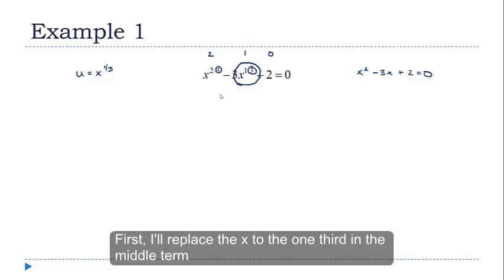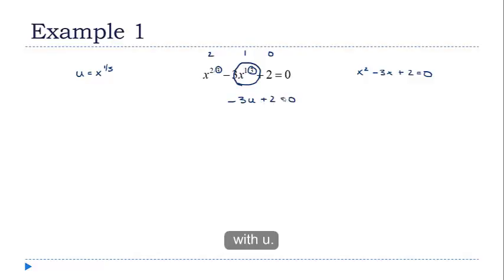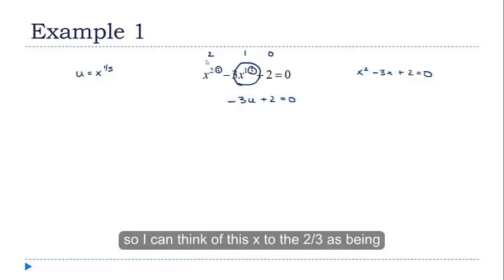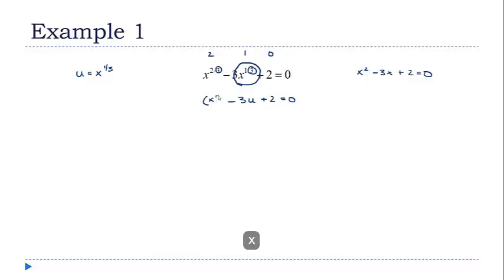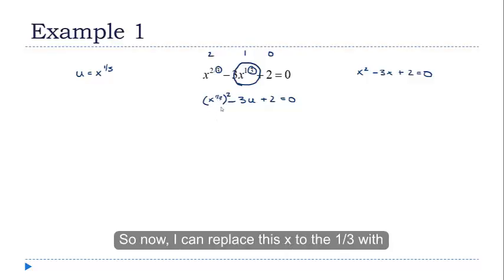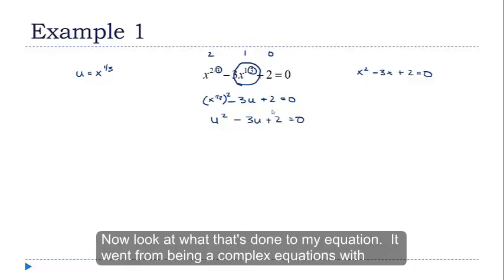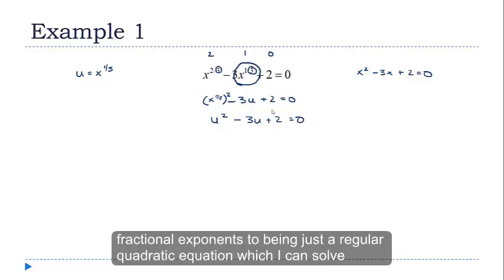Now look at how this is going to simplify things. First, I'll replace the x to the 1 third in the middle with u. Remember that to simplify an exponent to an exponent, you multiply the exponents together. So I can think of this x to the 2 thirds as being x to the 1 third squared. So now I can replace this x to the 1 third with u. Now look at what that's done to my equation. It went from being a complex equation with fractional exponents to being just a regular quadratic equation, which I can solve by factoring.